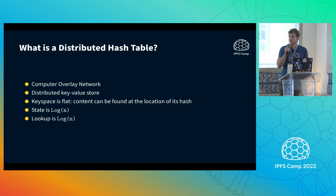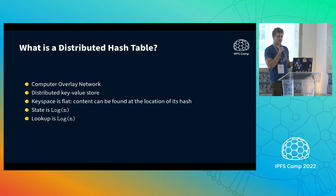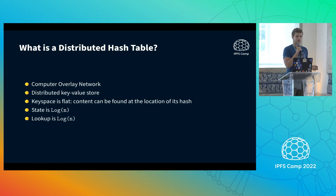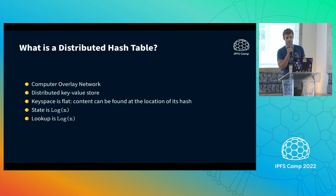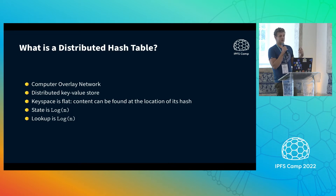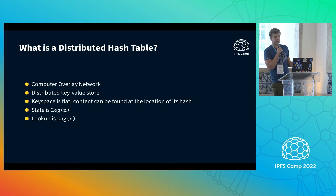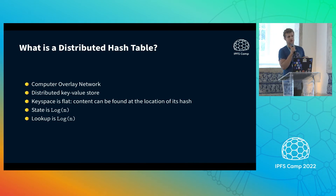Why do we have a DHT and what are the trade-offs? If we have N nodes in a network, we could keep track of every single node so we can reach them directly — it will be fast, but it doesn't scale because we have to keep very large state. Alternatively, we could keep track of only a small number of peers, but then looking up content requires iterating through all peers, which is not efficient. The trade-off is we want to keep track of log(N) peers, allowing us to efficiently look up content with log(N) complexity — meaning log(N) hops to reach the content.